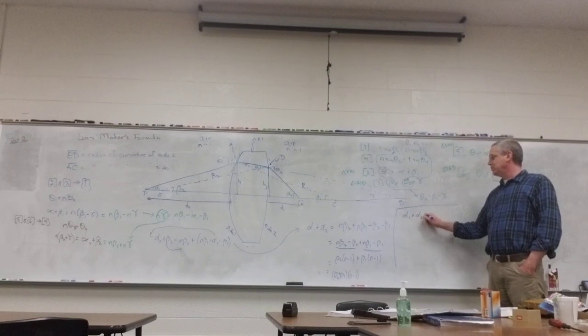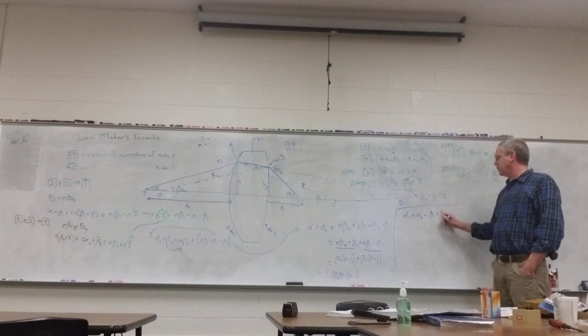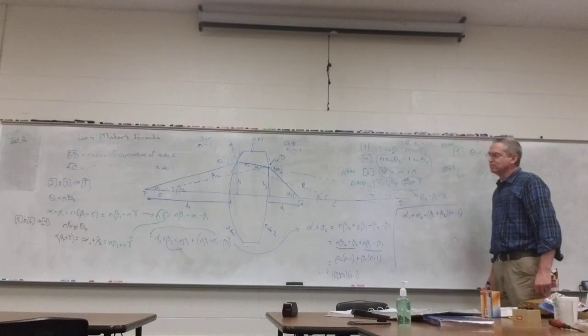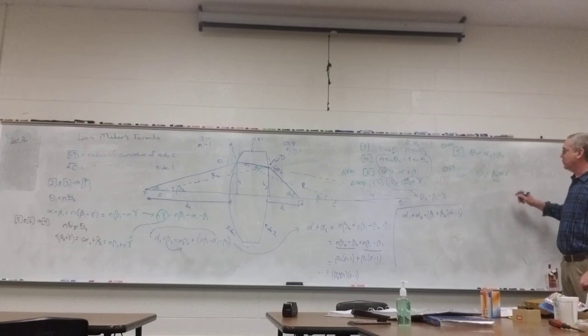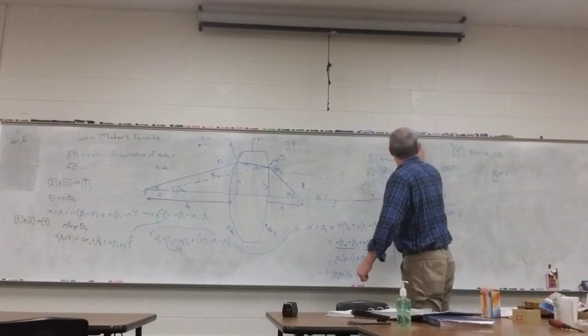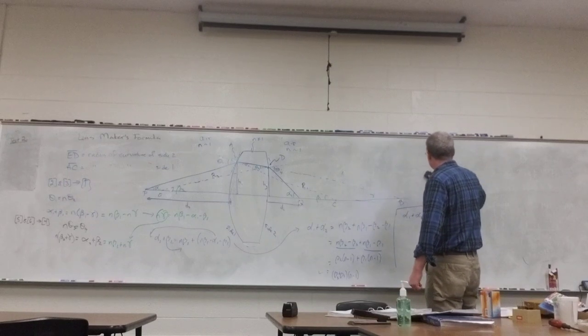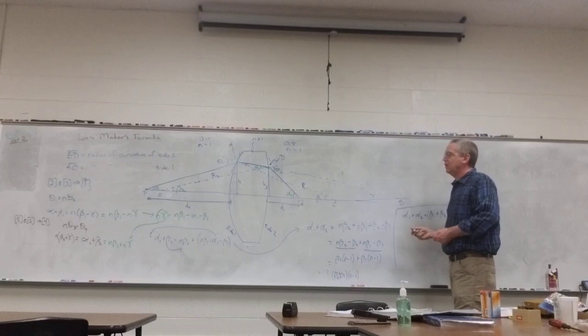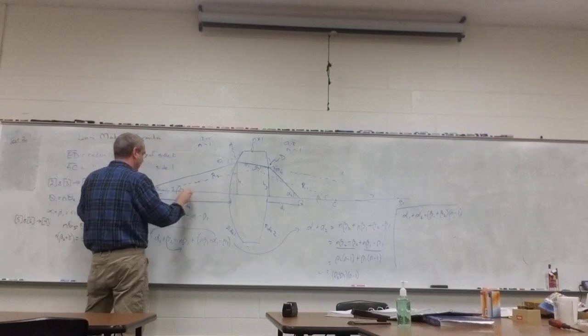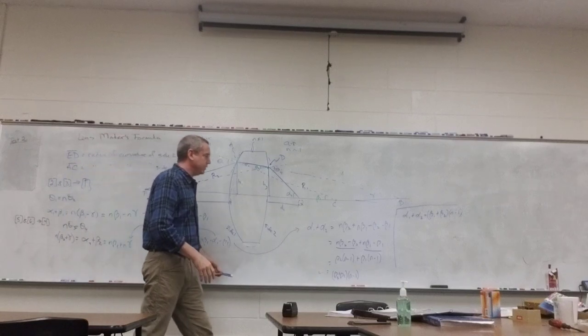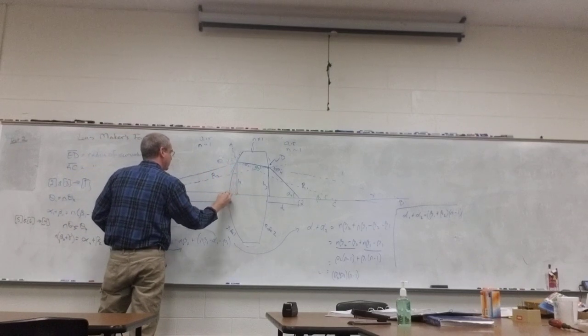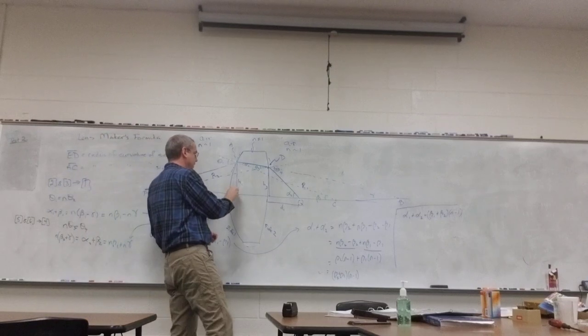So I'm now left with alpha 1 plus alpha 2 equals beta 1 plus beta 2 times n minus 1. This is just a recap of what we got. We don't need the original formulas anymore, so I'm going to erase those. They have served their purpose. Let's take a look at this right triangle. This is from P to A and then straight down and over, basically a right triangle there.